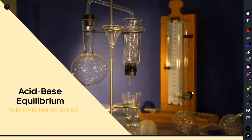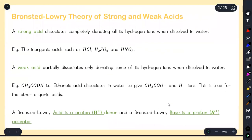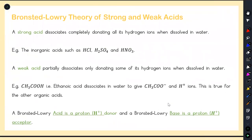Today I'm going to go through acid-base equilibrium. These are actually the slides I use in our group classes, so I'll go through the content and remind you about important things you need to know. First and foremost, we have to talk about the Bronsted-Lowry theory of strong acids and weak acids. Make sure you know how to define what strong acids and weak acids are.